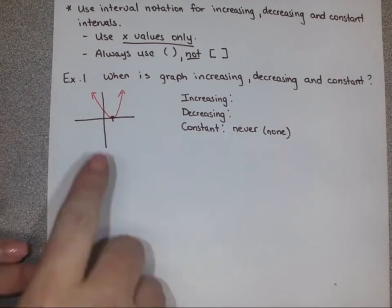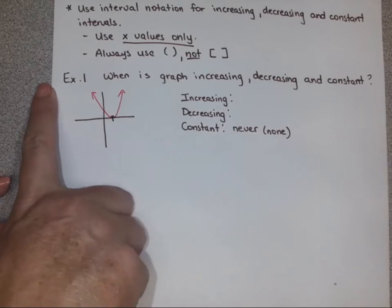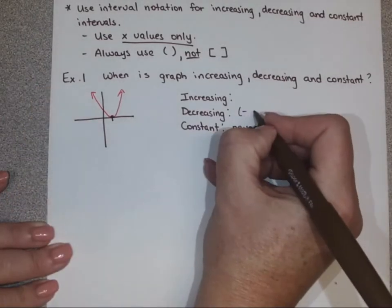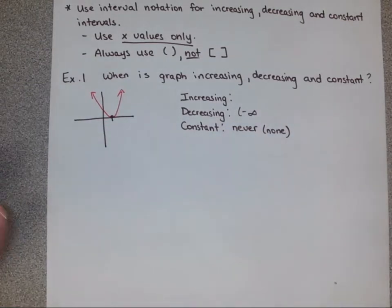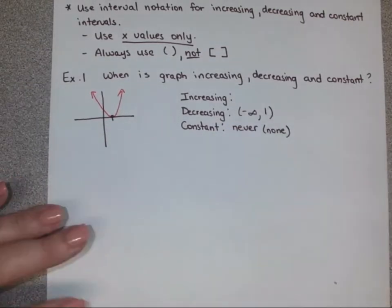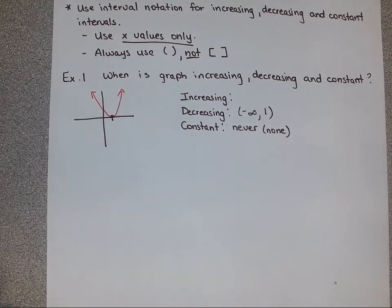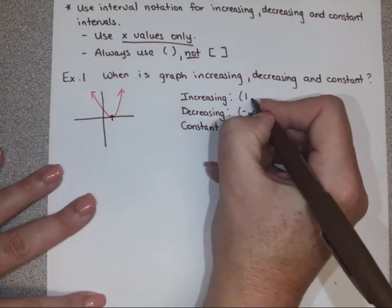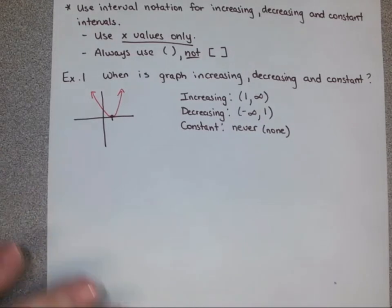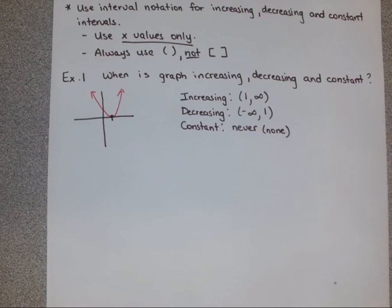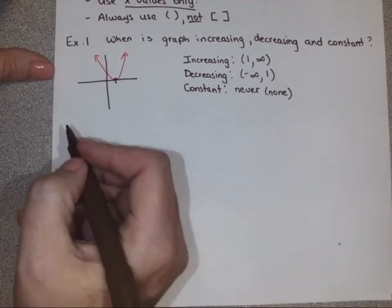Only look at the x values. From negative infinity, to what x value do we stop decreasing? We stop decreasing at x equals one. We don't care about the y value, only the x value. Then after one, we start increasing from one to infinity. The reason we don't include one is that you could argue it's either the end of the decrease or the beginning of the increase — turning points technically belong to both, so we just don't include them.